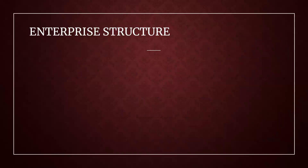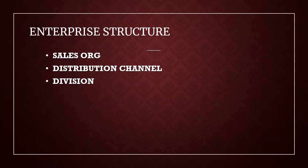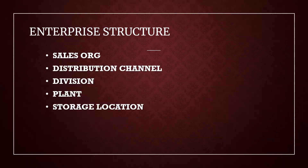They have asked: what is Enterprise Structure in SAP SD? It is nothing but Sales Organization, Distribution Channel, Division, Plant, Storage Location, and Shipping Point. This is the expected answer.